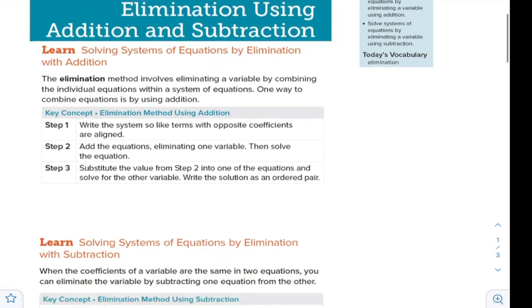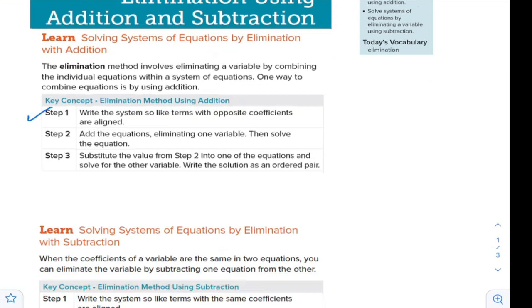Write the system so like terms with opposite coefficients are aligned, means above each other. Then we are going to add the equations, eliminating one of the variables, then solve the equation. Step 3, after we find one of the variables, then we will replace to find the other.